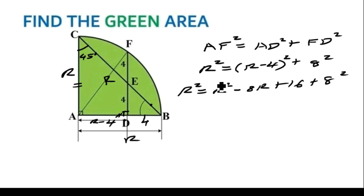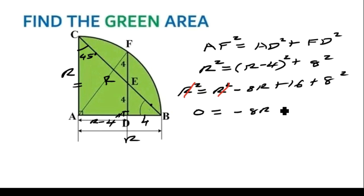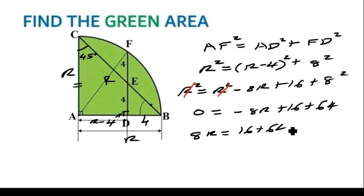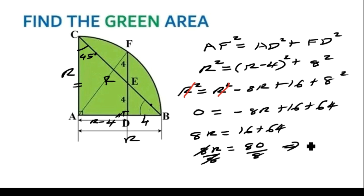R squared cancels out with R squared on the right. You remain with 0 equals negative 8R plus 16 plus 64, since 8 squared is 64. Bringing negative 8R to the left side of the equation, you get 8R equals 16 plus 64. So 8R equals 80. Dividing both sides by 8, R equals 80 divided by 8, which is 10.